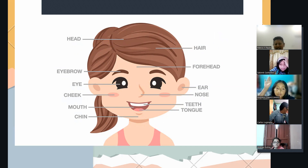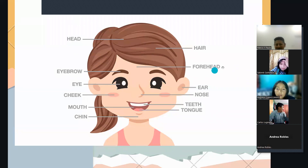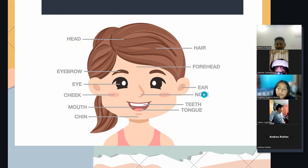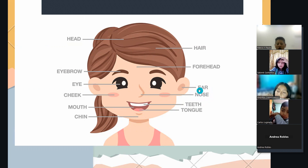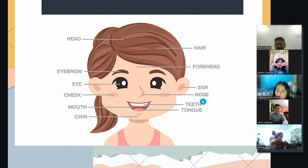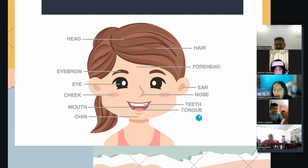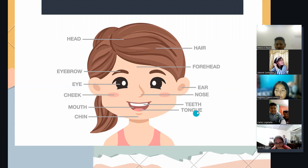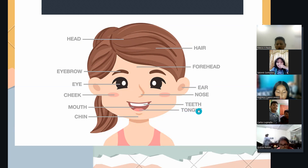Ahora vamos con Andreita. ¿Cómo se dice el frente? Forehead. Muy bien. Oreja — ears. Carlitos, nariz — nose. Aleandro, dientes. Leandro, ¿cómo se dice lengua? Tongue. Muy bien.